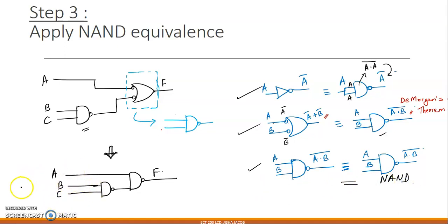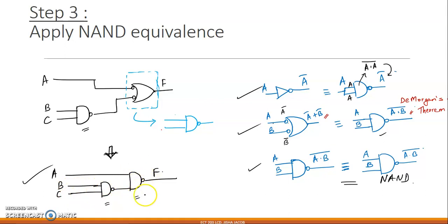The final circuit we end up with has A as one input, and B and C going to a NAND gate. What you have here is all NAND gates, completing the NAND-only implementation.